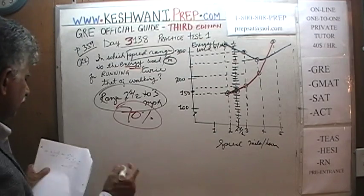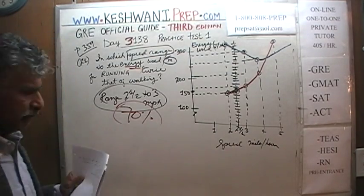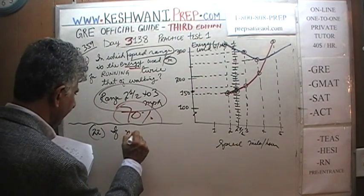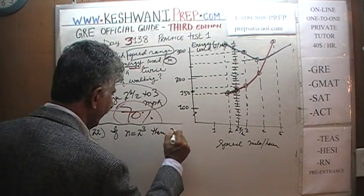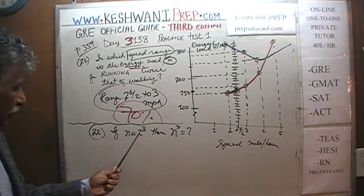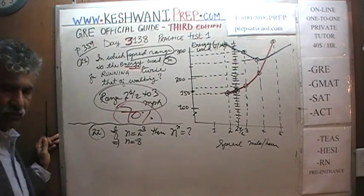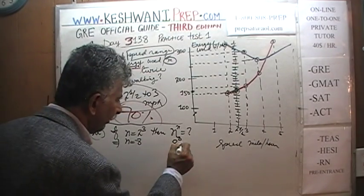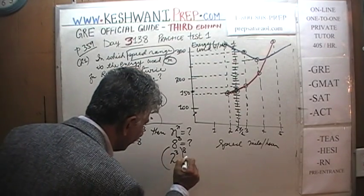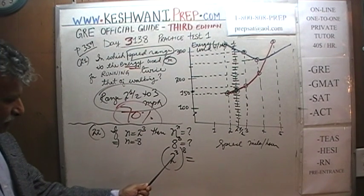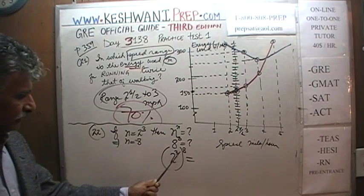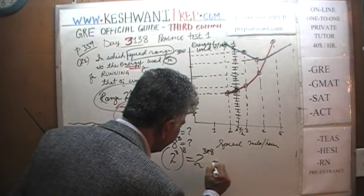Number 22. If n is equal to 2 raised to the third power, what's the value of n raised to n? Well, if n equals 2^3, that implies n must be 8. So what they are looking for is 8 raised to 8. But 8 can be written as 2^3, so we have (2^3)^8. We know that means we add 3 eight times, or simply multiply 3 times 8, which gives us 2 raised to the 24th power. The answer is 2^24.